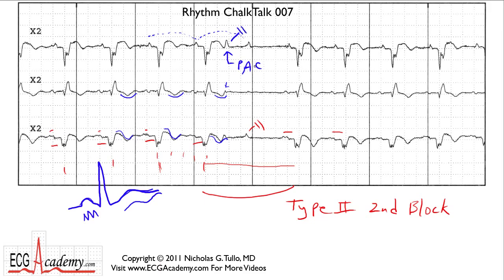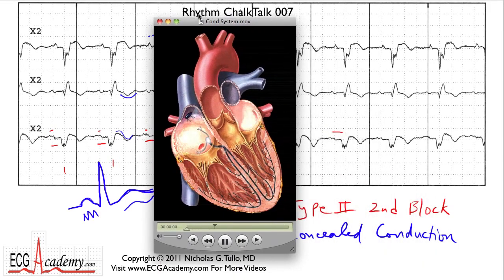Blocked PACs or non-conducted PACs occur quite frequently, and we don't really think much of it. But there's a concept that you have to understand in this video, and it's called concealed conduction. Concealed conduction is an electrophysiologic phenomenon that allows us to see conduction into a part of the cardiac conduction system that's not apparent. Let's review a little bit of the physiology here. In the high right atrium is the sinus node that fires, and you have atrial depolarization that spreads across both atria.